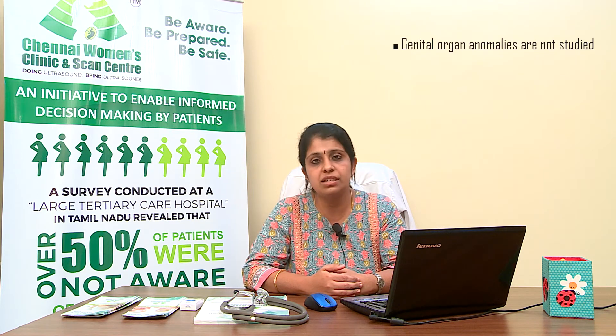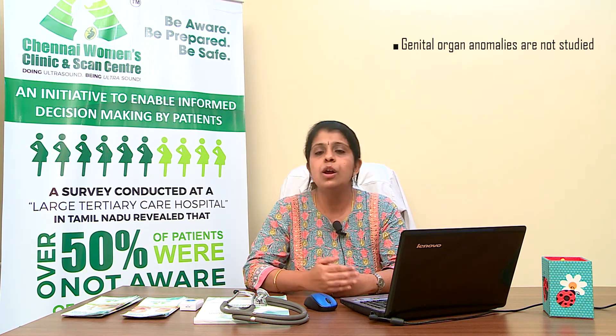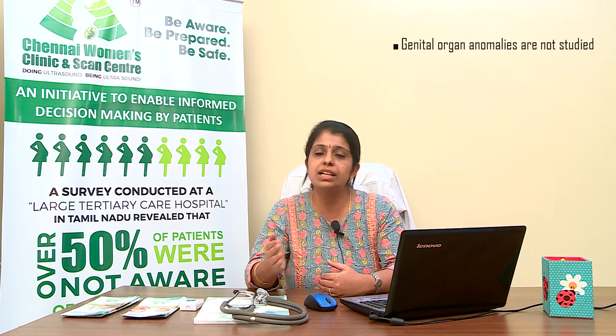A very common question is: if you do an anomaly scan, is it guaranteed that the baby is going to be normal? No, not at all. There are so many limitations — we perform the anomaly scan at the highest possible quality to ensure all vital organs appear normal, but there could be evolving anomalies which we may miss. Also, genital organ anomalies are not studied as per the PC-PNDT Act. Depending on the abnormalities found, the doctor might recommend a subsequent scan — for example, if a low-lying placenta is seen, a repeat scan prior to delivery checks whether the placenta has moved away.